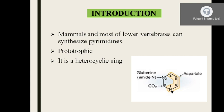The pyrimidine ring has six atoms: two nitrogen atoms and four carbon atoms. N1, C4, C5, and C6 are derived from aspartate. The second carbon atom (C2) is derived from bicarbonate — remember it as CO2. The third nitrogen (N3) is contributed by glutamine. So the two main contributors are aspartate and glutamine — remember A for aspartate, G for glutamine — the same amino acids that also contribute to purine biosynthesis.